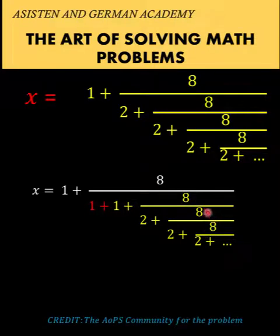Now I want you to focus your attention to the yellow part here and compare that with the original one. We have the plus sign, we have 8 in the numerator all over. Then 2 plus 8 over, 2 plus 8 over, and continue the pattern.